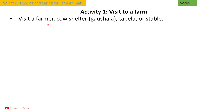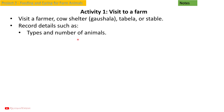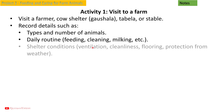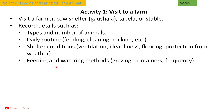Activity 1: Visit to a Farm. Visit a farmer's cow shelter, go-shala, tabela, or stable. Record details such as types and number of animals, daily routine including feeding, cleaning, and milking, shelter conditions covering ventilation, cleanliness, flooring, and protection from weather, as well as feeding and watering methods, grazing, containers, and frequency.